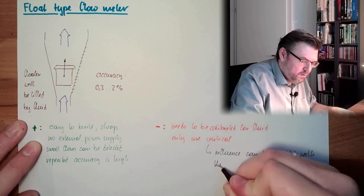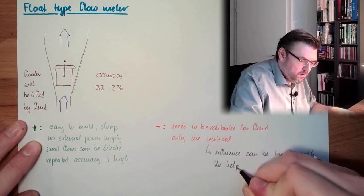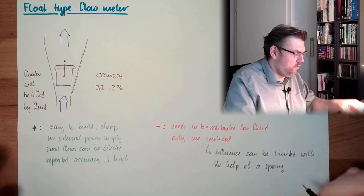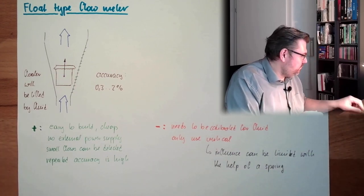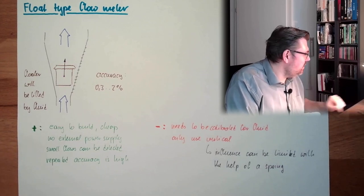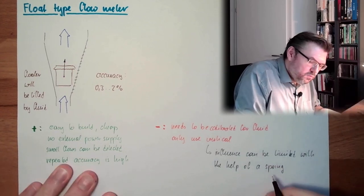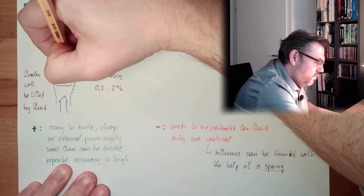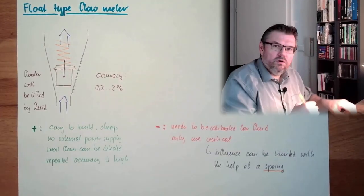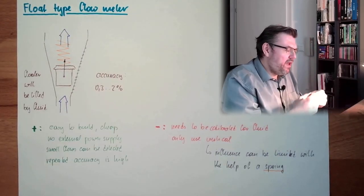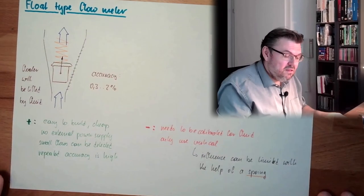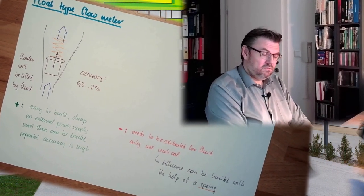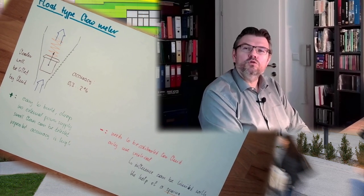Can be limited with the help of a spring. So I will draw this in here. This spring must not be there, so that we have here a spring load which is holding this in place. Then the dependency on the built-in direction is not that high. Almost gone.